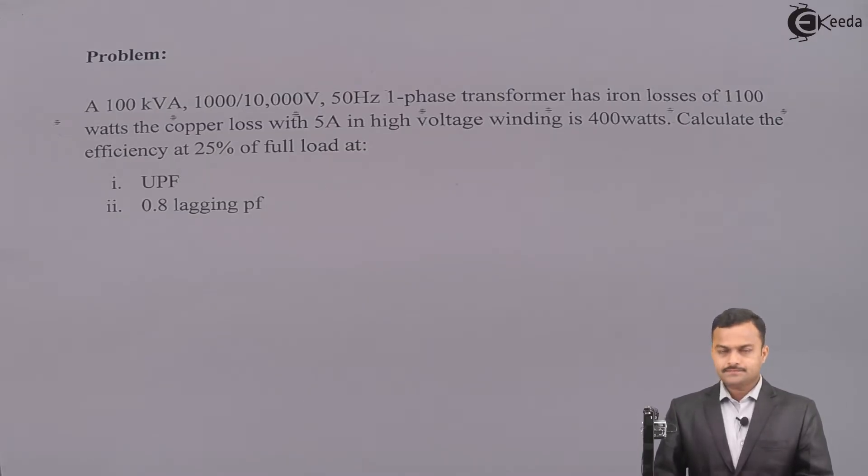The problem statement is: A 100 kVA 1000/10,000 volt 50 hertz single phase transformer has iron losses of 1100 watts. The copper loss with 5 ampere in high voltage winding is 400 watts. Calculate the efficiency at 25% of full load at unity power factor and second 0.8 lagging power factor.